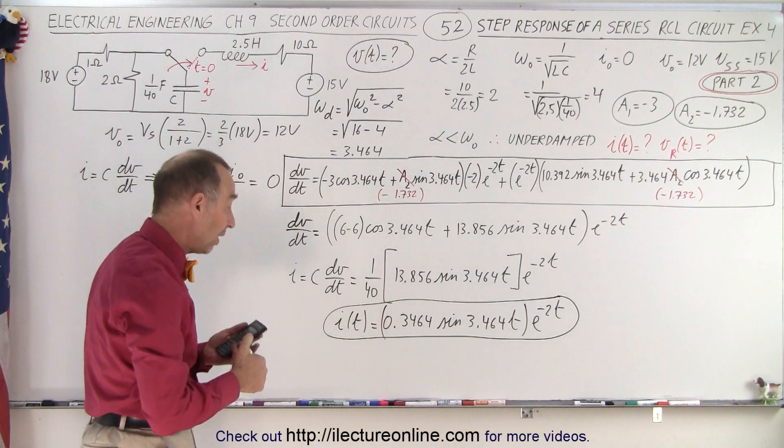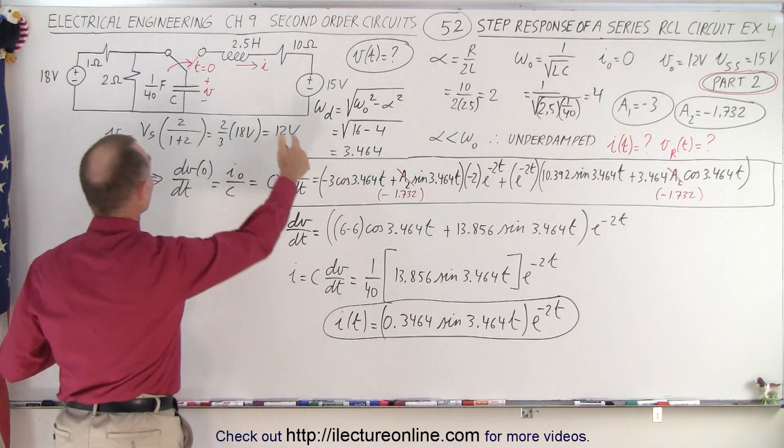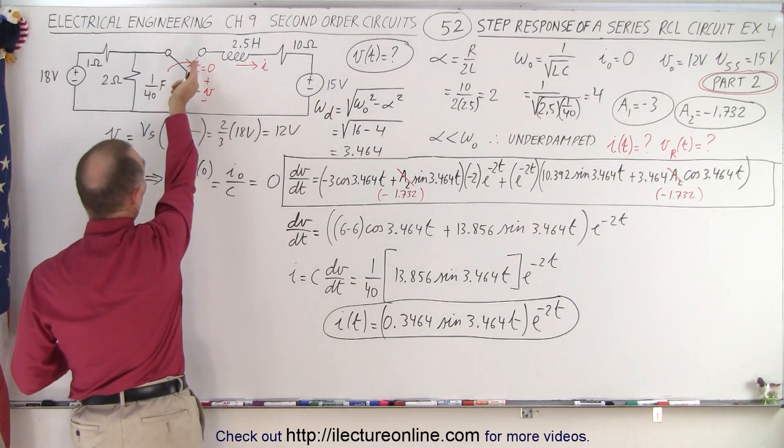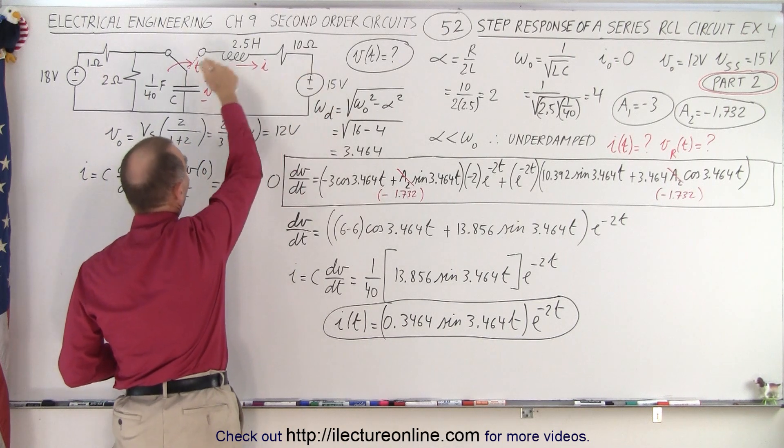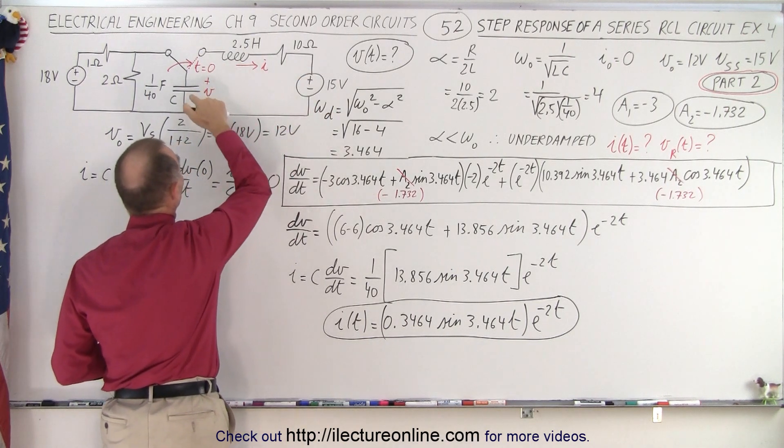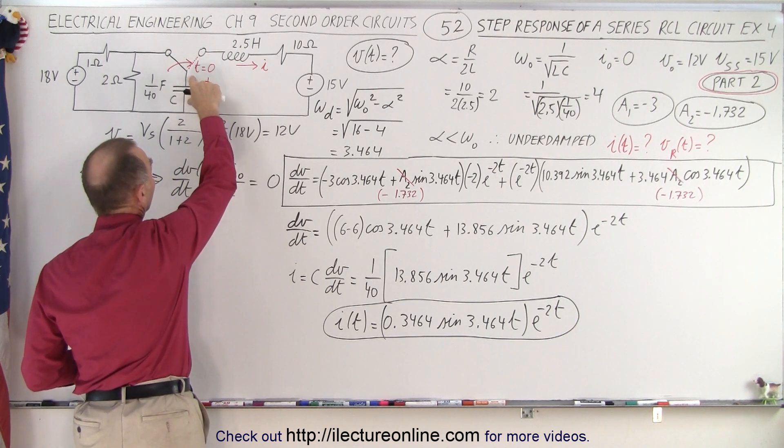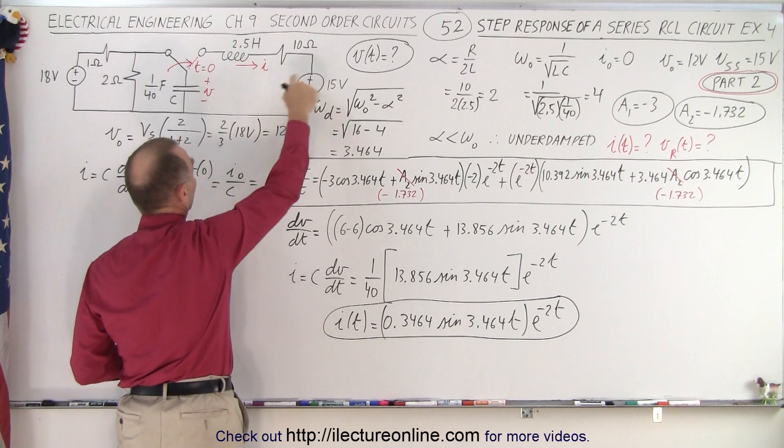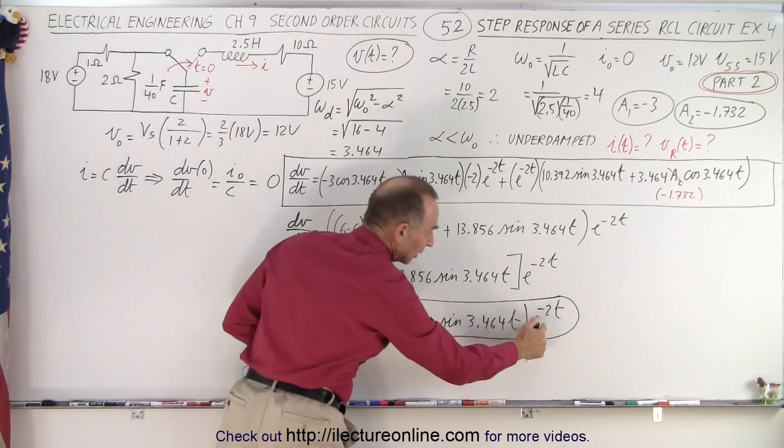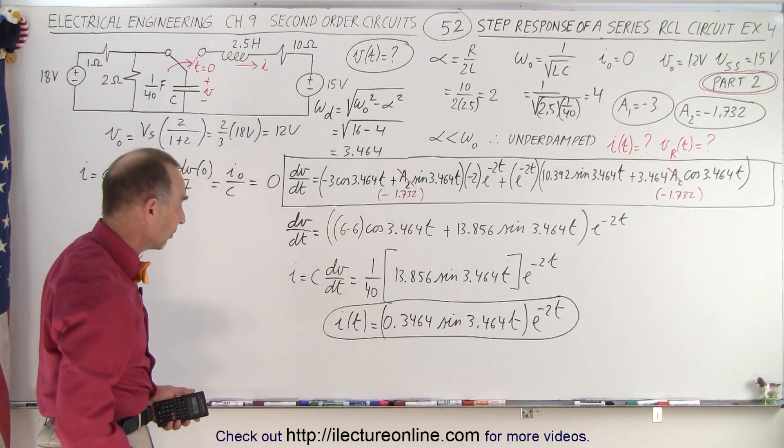Take a look. It's the transient current, but it doesn't have a constant term. When we look at the circuit, notice that once we close the switch, the power supply pushes current through the circuit. Eventually, the capacitor will fill with charge. Once the voltage on the capacitor equals the voltage across the power supply, the current will stop. That shows that when e to the minus 2t, when t gets big, that becomes 0. So the equation makes sense.